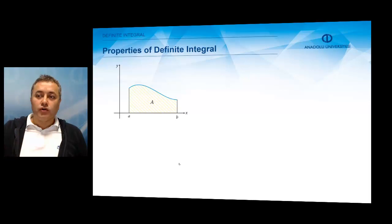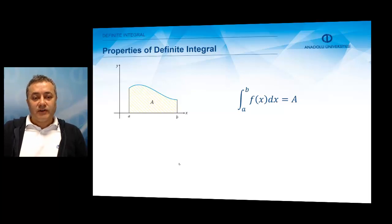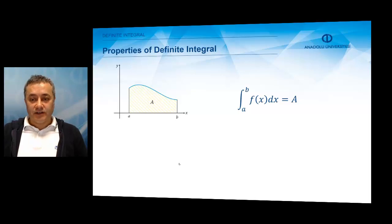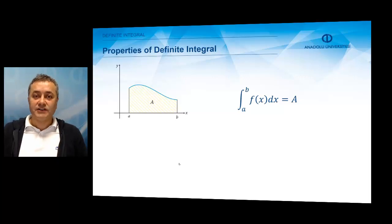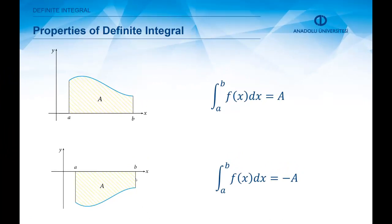Although we started with the area problem and defined a quantity I which is the definite integral of a function, they may not be the same thing. If we are given a positive function, the area under its graph will equal the definite integral of f of x. But if the function is negative, the definite integral of f of x will actually be the negative value of that area. So area is always a positive number, but the definite integral may be positive or negative, depending on what kind of function we are working with.